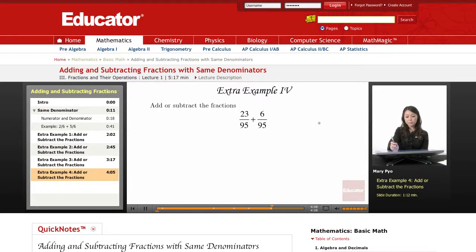Okay, the fourth example. When we're adding or subtracting fractions: 23 over 95 plus 6 over 95.